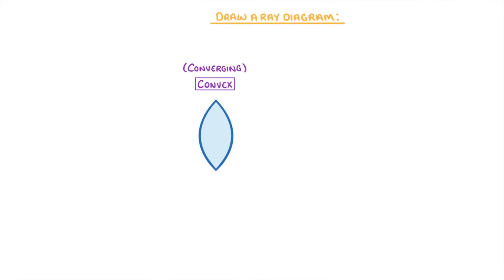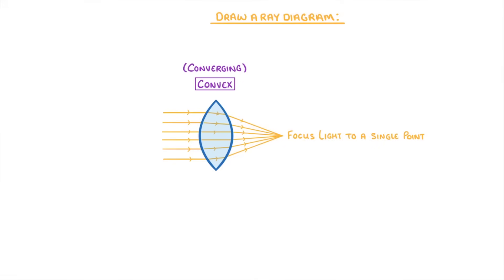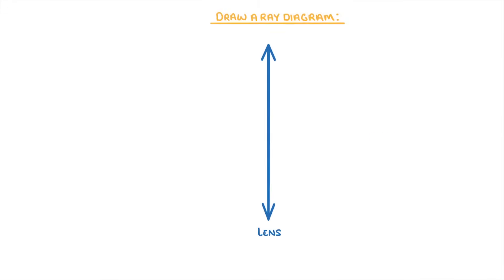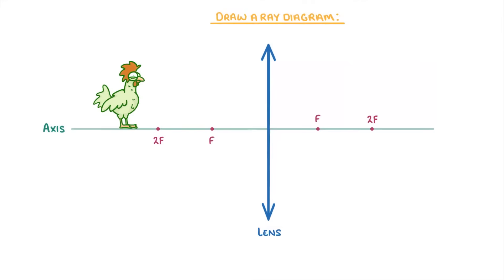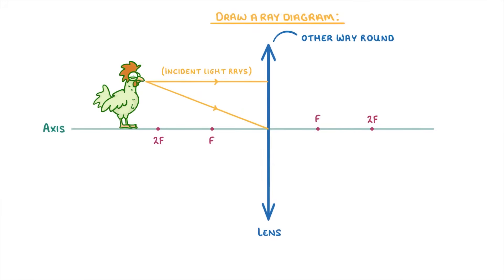The next thing we need to cover is exactly the same stuff, but this time for convex, or converging lenses, which focus light onto a single point. Just like before, the first thing we do is set everything up — so with our lens, our axis, focal points, the object, and the two incident light rays. The only difference so far is that the V shapes at the end of the lens are the other way around, because this is how we represent convex lenses, which get narrower towards the ends.